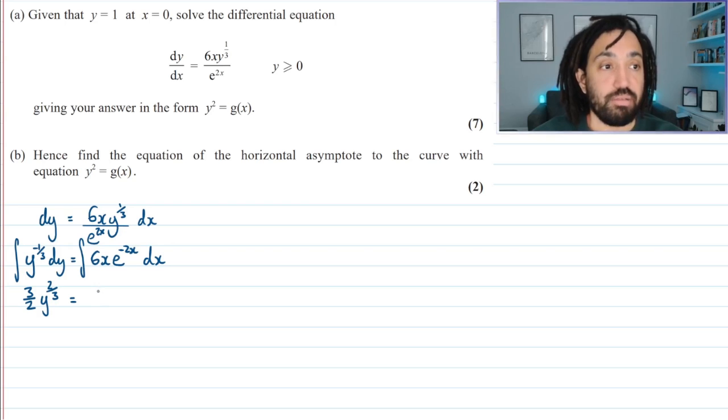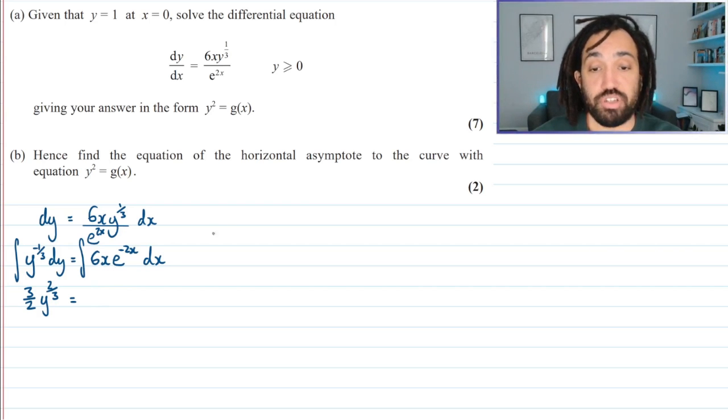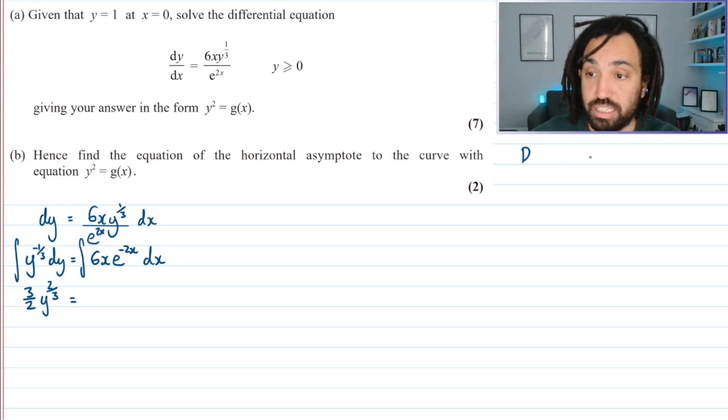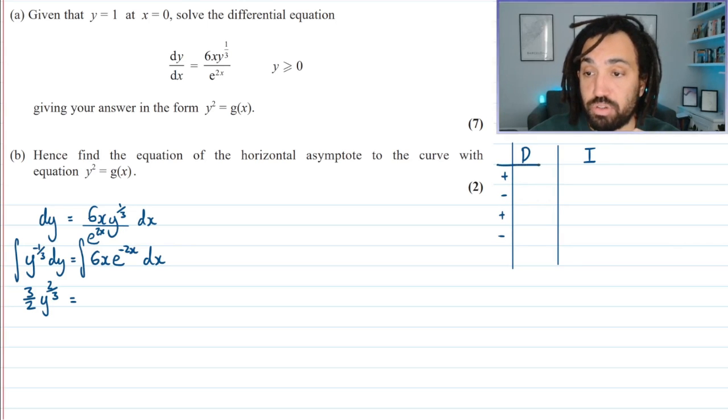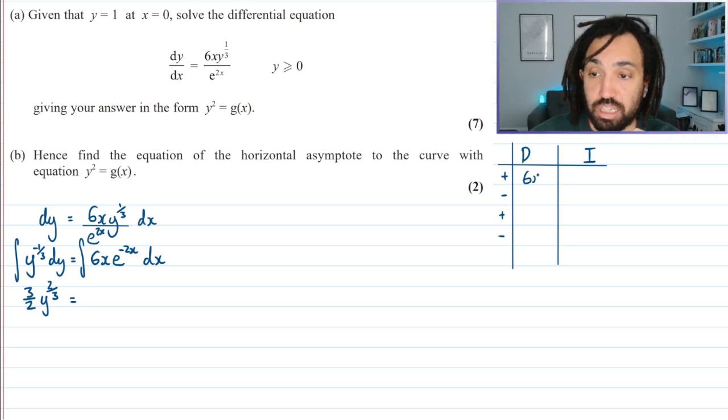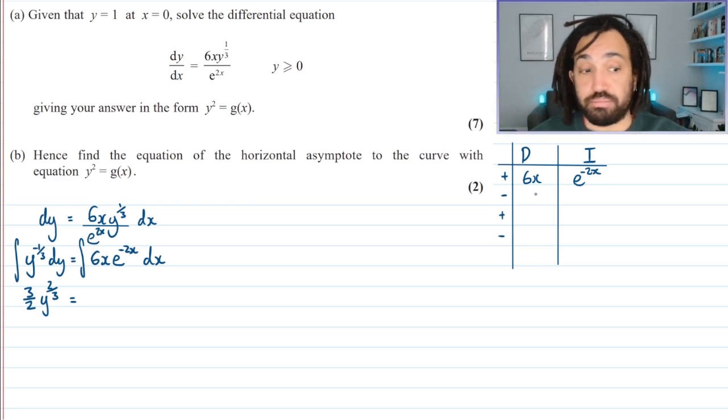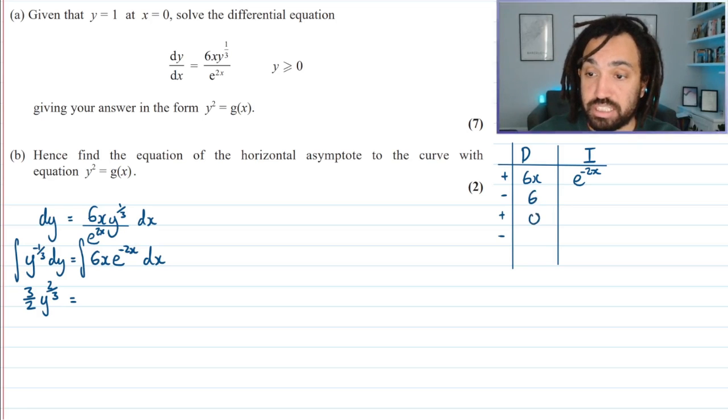Aha! This is a parts, because it's a product, so I'm going to have to use integration by parts. And I'm going to do the DI method, which is very quick and easy, and I recommend you learn it. So what I do is a little table like this. Plus, minus, plus, minus. I'm going to differentiate the polynomial part, which is the 6x, and I'm going to integrate the other part, which is the exponential part, e to the minus 2x. 6x differentiates to 6, and then 6 differentiates to 0.